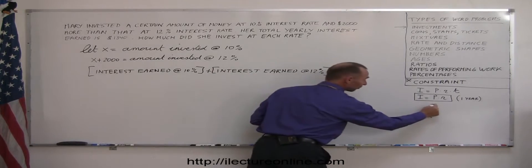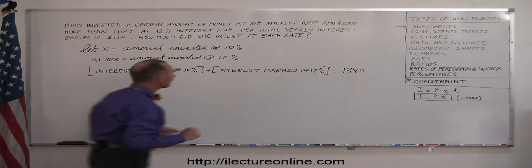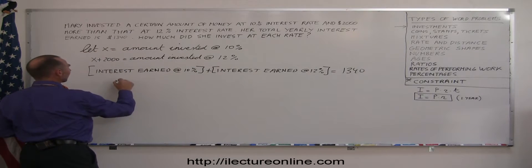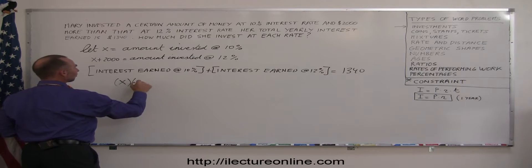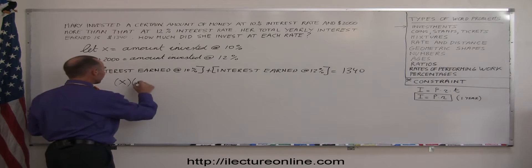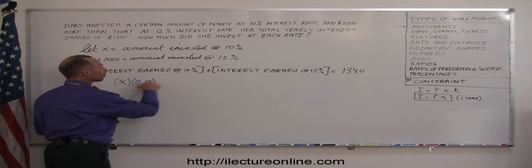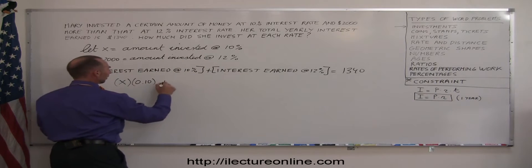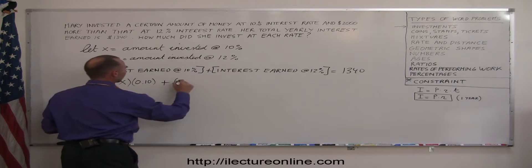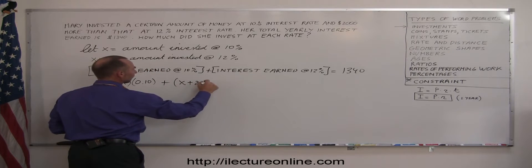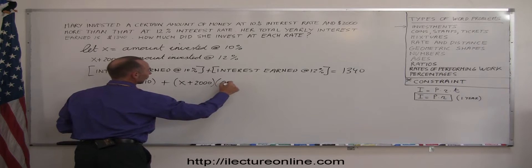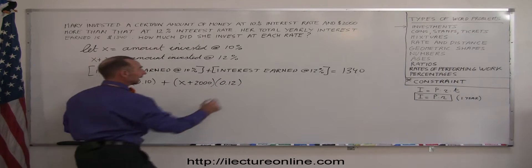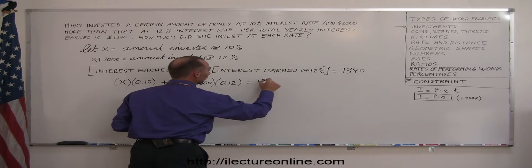Now we simply have to put in what these are. Just like here, it's the principal times the rate at which we invested. Since the principal at 10% is x, we can write x times 10%. Now 0.10 is the decimal equivalent of 10%, so that's the interest earned at 10%, plus x plus 2,000 is the amount invested at 12%, so we write 0.12. This is the amount of interest earned at 12%, and that should add up to $1,340.